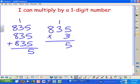3 plus 3 plus 3 is 9, plus 1 is 10. 3 times 3 is 9, plus 1 is 10.